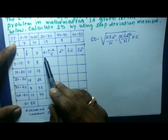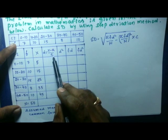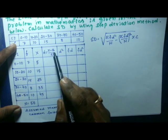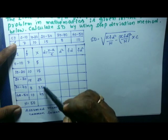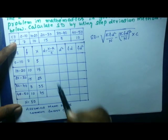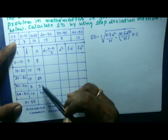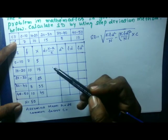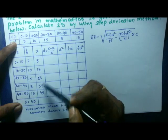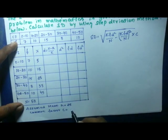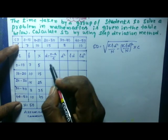The next column is d, where d = (x − a) / c. Here x is the midpoint, a is the assumed mean, and c is the common factor. We take assumed mean a = 25. The midpoints 5, 15, 25, 35, 45 are all divisible by 5, so the common factor c = 5.